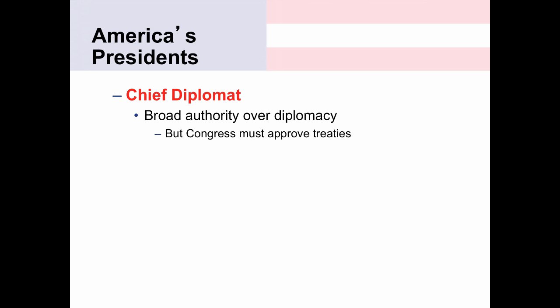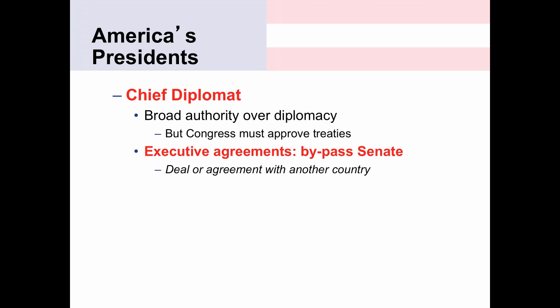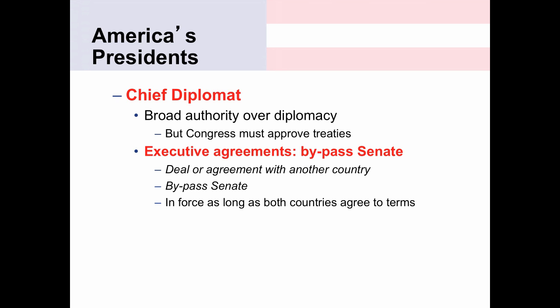Here again, the reality is that the president actually has more authority than the Constitution would indicate, through the use of executive agreements. Executive agreements are used to bypass the Senate—basically a deal or agreement with another country, like a mini treaty. It has all the parts and looks of a treaty, but it doesn't require Senate approval. Executive agreements are in force as long as both countries agree to the terms, and it is not legally binding in the same way a treaty is.